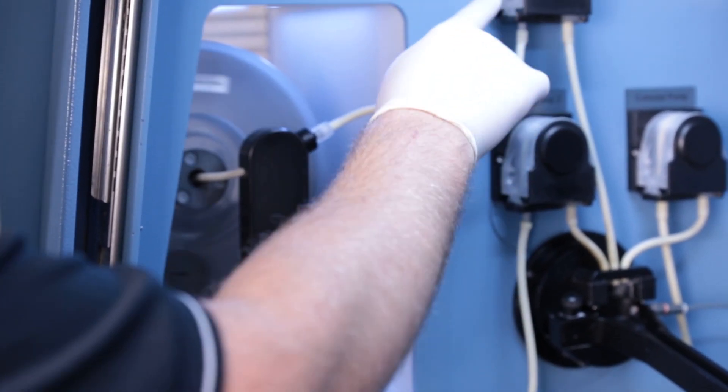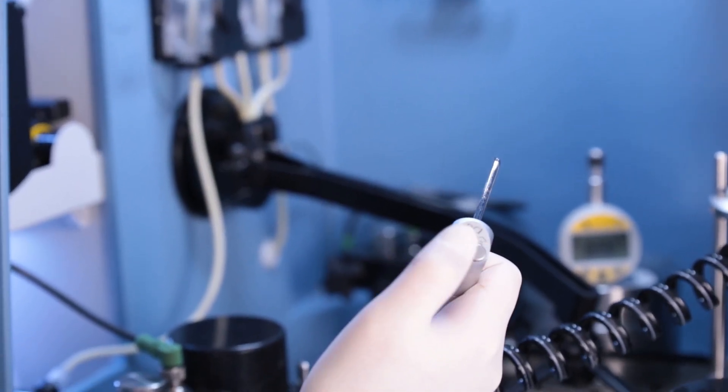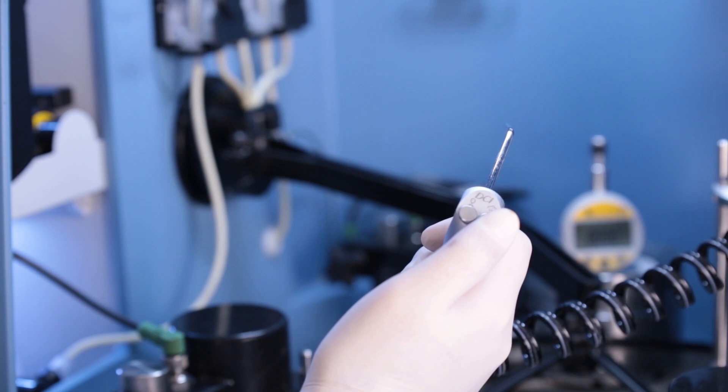Slurry delivery is accurately delivered by the touchscreen control of peristaltic pumps. There's also an inbuilt air and water cleaning gun for both the samples and the jigs after each process.